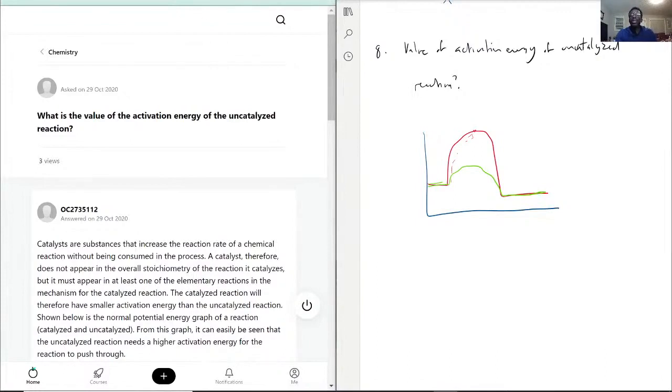And whether it involves changing the intermediate steps and such, the goal is that there's going to be less activation energy when a catalyst is involved. So with that being said, the value of the activation energy of the uncatalyzed reaction - when catalyst is not involved, it means that there will be more of an activation energy threshold you have to get to.